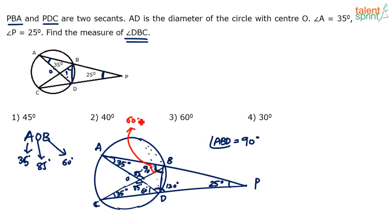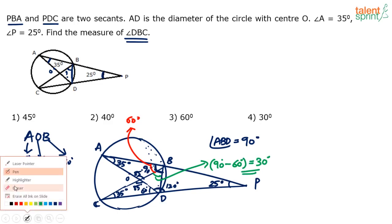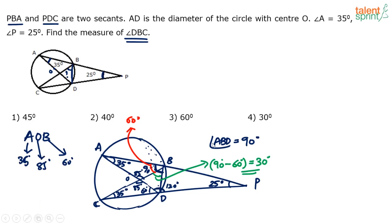So angle B is 60 degrees on this side, and the total angle ABD is 90. We need to find the green angle — angle DBC. The total angle is 90, subtract the 60 degrees, giving 90 minus 60 equals 30 degrees. There are a number of ways of doing it, but the final answer is the same: 30 degrees. The answer to this question is option 4, 30 degrees.